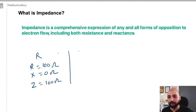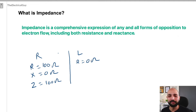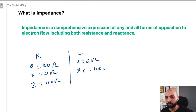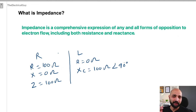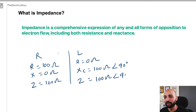Similarly, a perfect inductor has zero resistance and only offers inductive reactance XL — let's say 100 ohms. Since in an inductive circuit voltage leads current by 90 degrees, we write the angle as 90°. You can refer to this as an impedance of 100 ohms at an angle of 90 degrees.